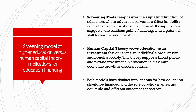Let us begin with the first distinction: the screening model of higher education versus the human capital theory and their implications for education financing. The screening model basically emphasizes the signaling function of education. It means that education serves as a signal or filter for ability rather than a tool for skill enhancement. Its implications suggest more cautious public financing with a potential shift towards private investment. This is just an introduction to what the screening model refers to.